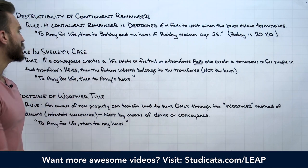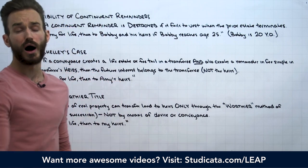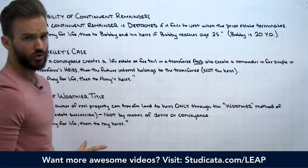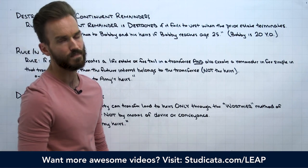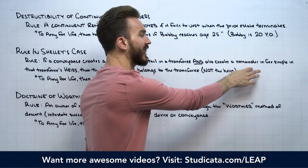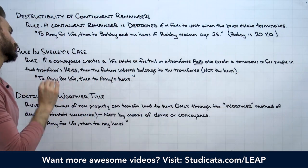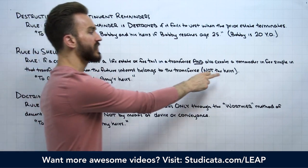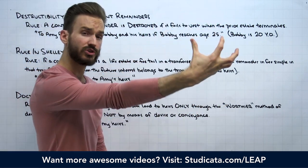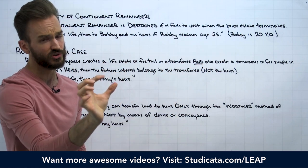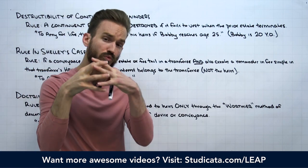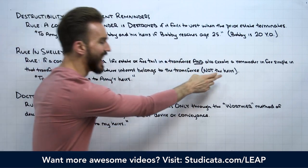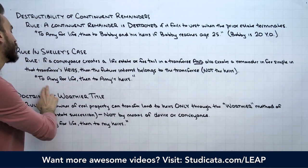Our next common law limitation — also largely abolished — is the rule in Shelley's case. Under the rule in Shelley's case, if a conveyance creates a life estate or fee tail in a transferee and also creates a remainder in fee simple in that transferee's heirs, then the future interest belongs to the transferee, not the heirs. Effectively, the larger interest — the fee simple remainder — and the smaller interest — the life estate — merge into one estate, usually fee simple absolute, and that belongs to the transferee, not the heirs.